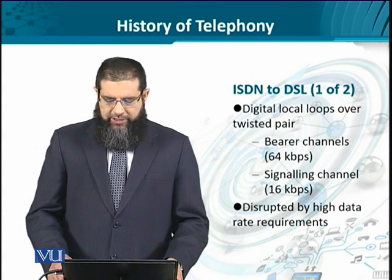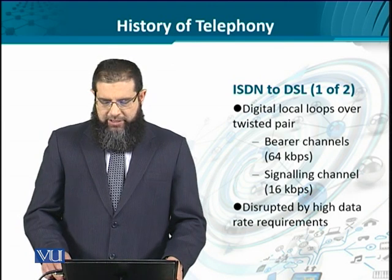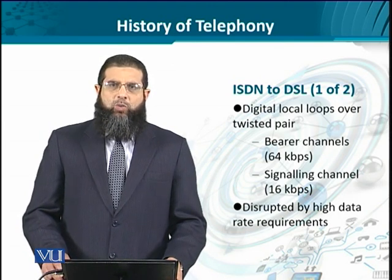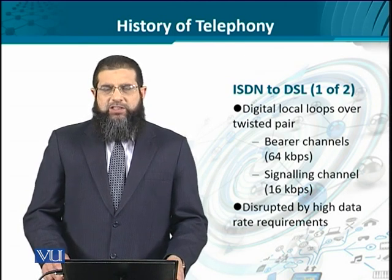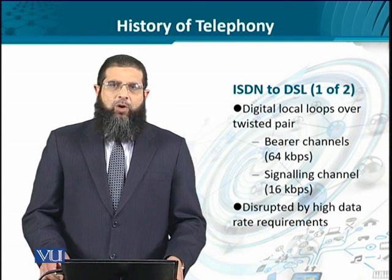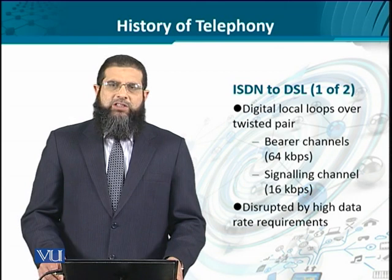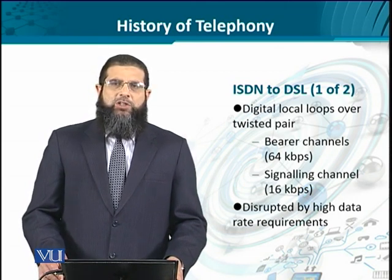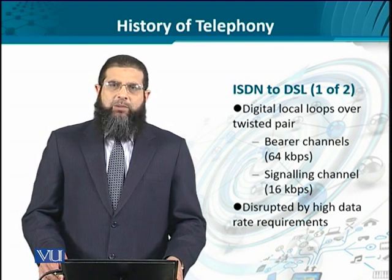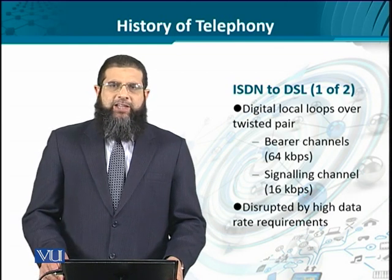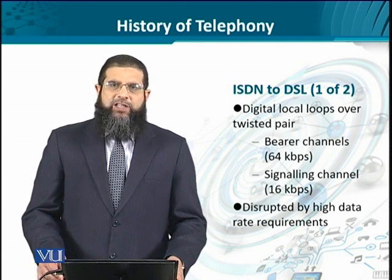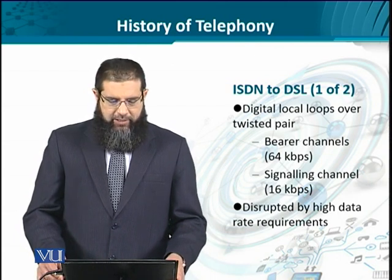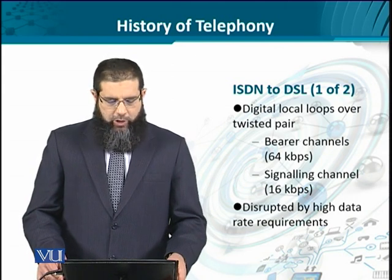For that, two bearer channels of 64 kilobits per second and a D-channel — or delta channel — of 16 kilobits per second were integrated into a single household, that is, per household. Since ISDN emerged around the same time frame when internet services were also getting widely popular, ISDN started lagging behind in terms of service provisioning. After all, the internet came with a lot of promises — from surfing to intelligent browsing to chatting to voice over IP. So ISDN fell short of providing these services at high data rates, because it was meant to provide services at only 64 kilobits per second each.